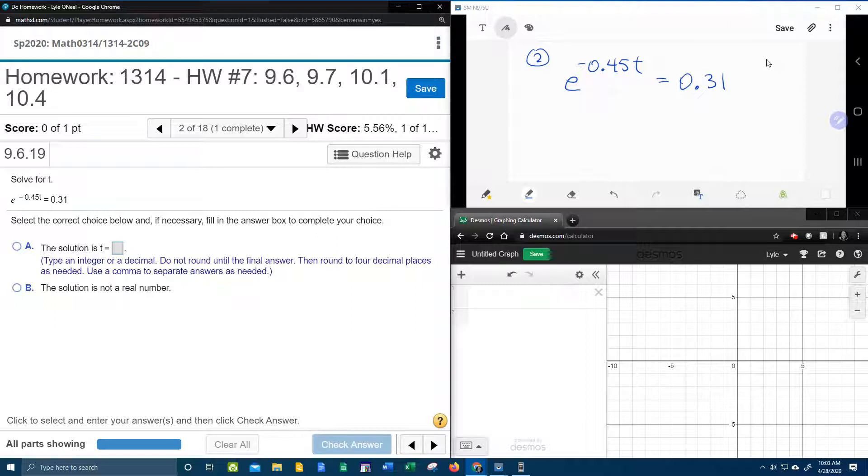First of all, having an exponential equation, we could consider the method of common bases. However, we have a base of e, and it's probably not going to be very easy to convert 0.31 to e to some power. So what we're going to use instead is converting this equation to logarithmic form.